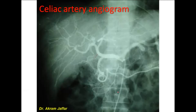This is a celiac artery angiogram. You can see here the catheter that has been passed from the femoral artery into the abdominal aorta — it reaches the abdominal aorta from the femoral via the external iliac, then the common iliac. This is the site of the catheter, and a radio-opaque material is injected into the celiac trunk.